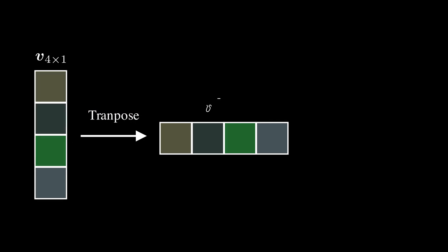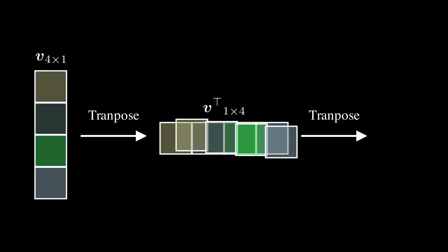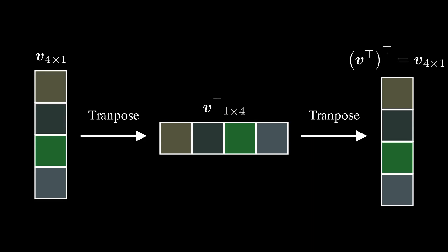What happens if we apply the transpose twice? If we start from a column vector V of size 4 by 1, the first transpose gives us a row vector of size 1 by 4. Then we apply the transpose again and the result will be our original column vector with dimensions 4 by 1. So we conclude that if you apply transpose an even number of times — like 2, 4, 6 and so on — you will get your original vector back. The same thing applies for matrices.